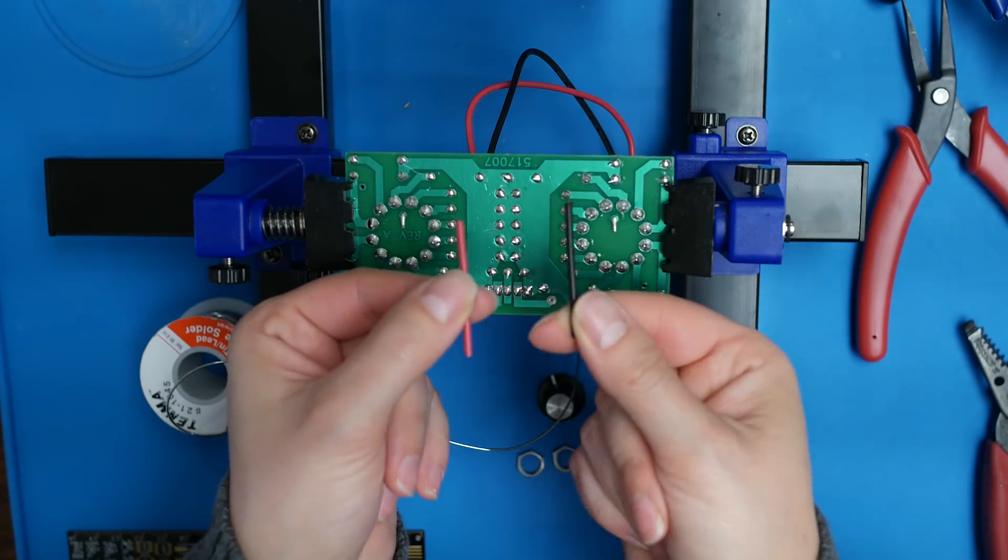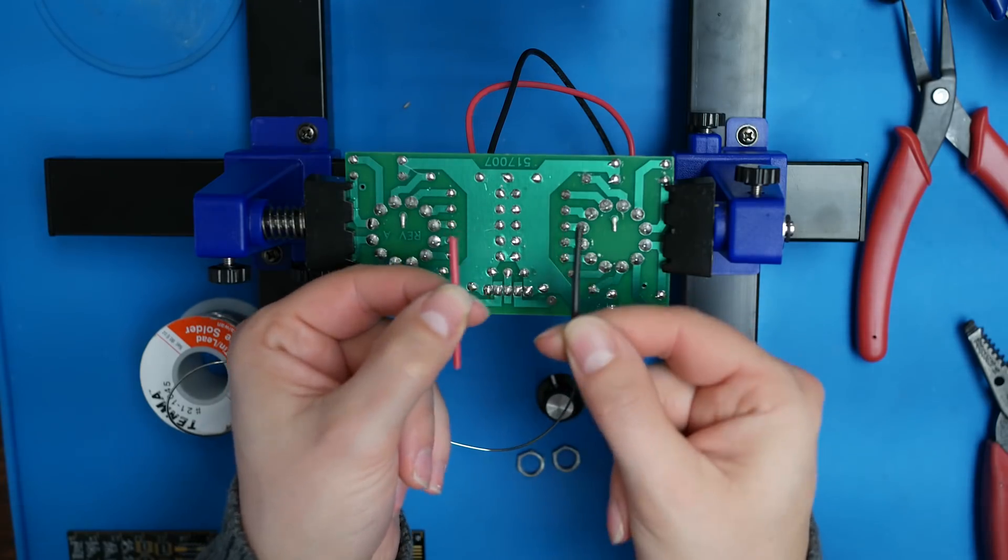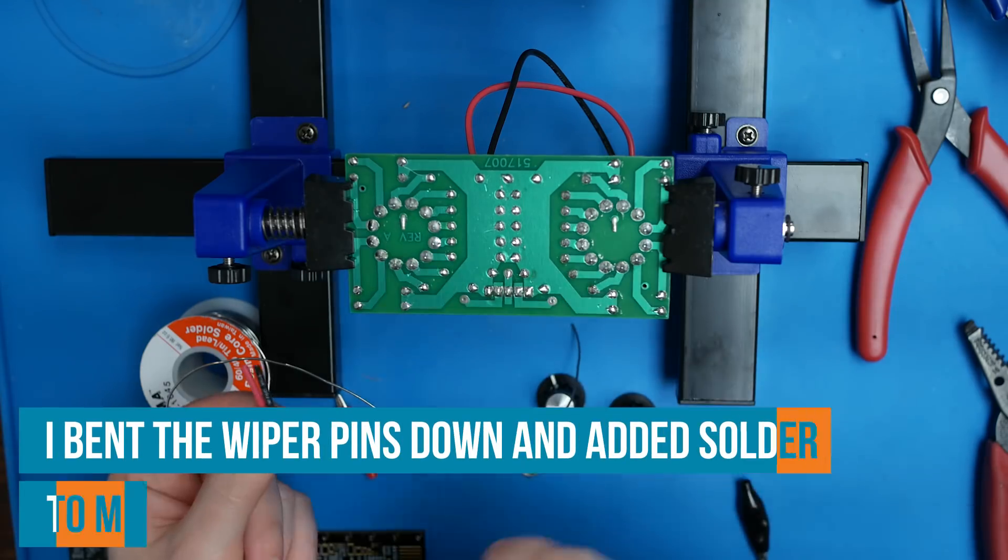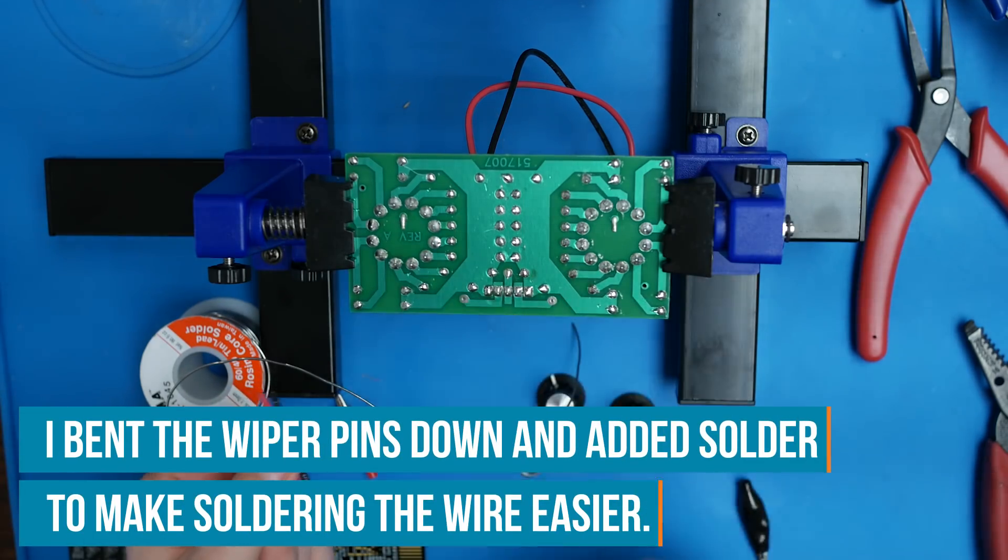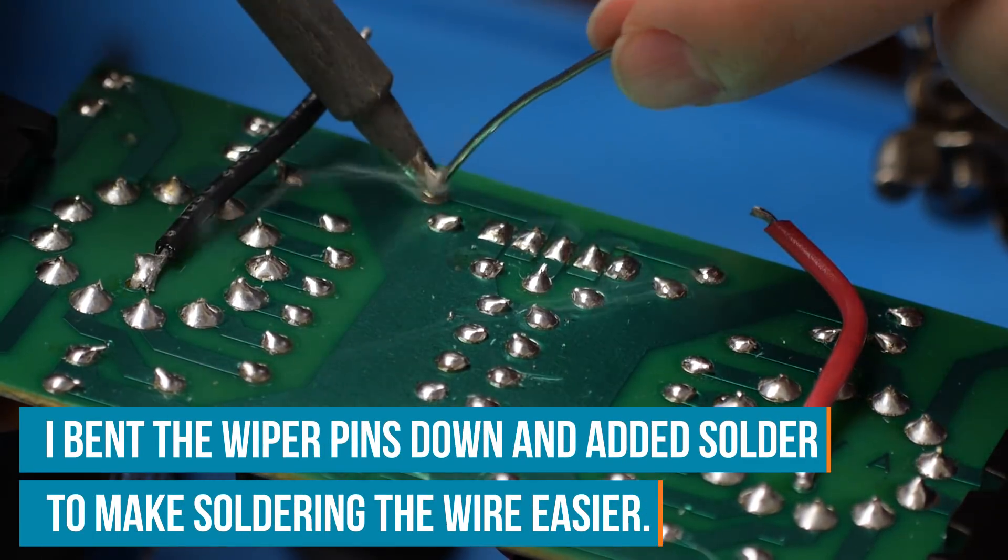Now take your small pieces of wire, trim and tin the ends and solder them to the wiper pin and then up to the switch. It doesn't matter which color goes on which side.